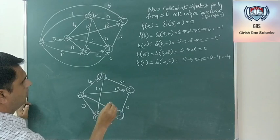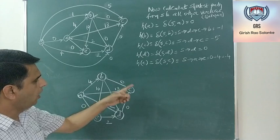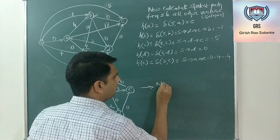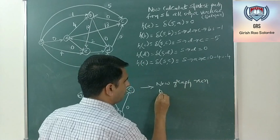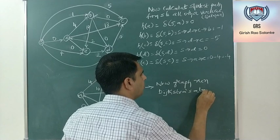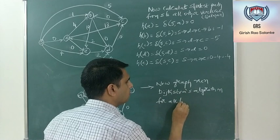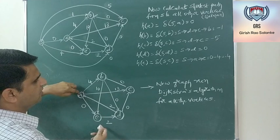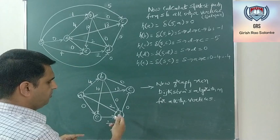Now once reweighting is done, take the original graph (A, B, C, D, E) with the new positive weights and remove vertex S and its edges. On this new graph, we can run Dijkstra's algorithm for all vertices — starting from A, then B, C, D, and E.